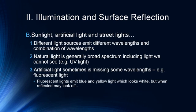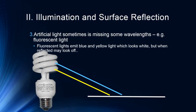Artificial light is sometimes missing some wavelengths. For example, many fluorescent lights emit blue and yellow light, which looks white because blue plus yellow light yields white. But when that light is reflected off surfaces, colors may look a bit off. If you've tried to do makeup or put together an outfit under fluorescent lights, the color can be difficult — we often feel we don't look as healthy under fluorescent lighting, and we pretty much all dislike it for that reason.